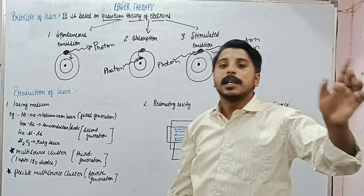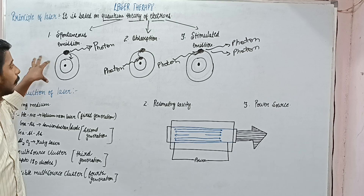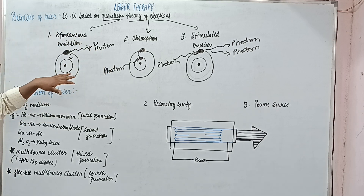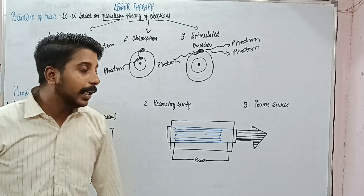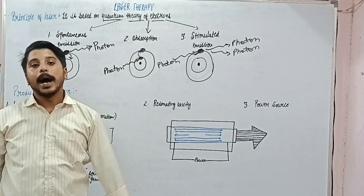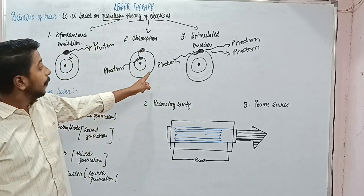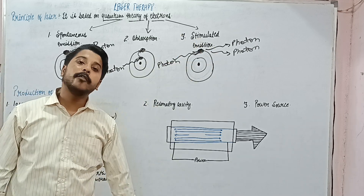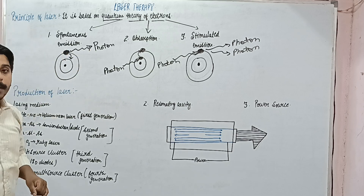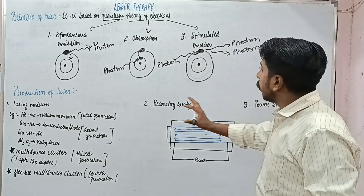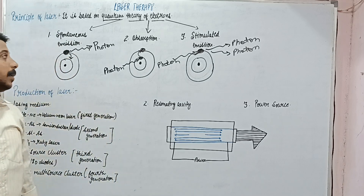So these are the three main processes involved in the production of laser. First, spontaneous emission: electrons in higher energy levels come down to gain stability and release energy as photons. Second, absorption: electrons at lower energy levels gain energy from photons and go to higher levels. Third, stimulated emission: an electron already at a higher energy level receives energy from a photon and releases multiple photons. Collectively, these photons form a beam of laser.